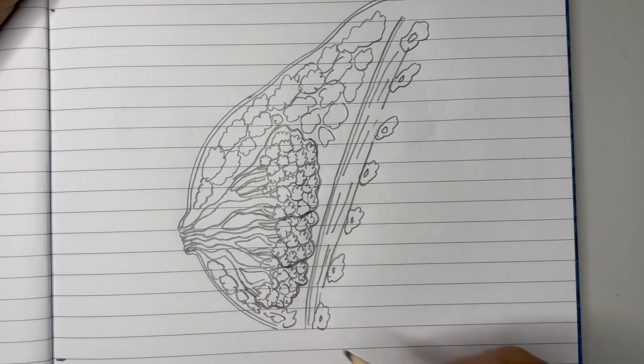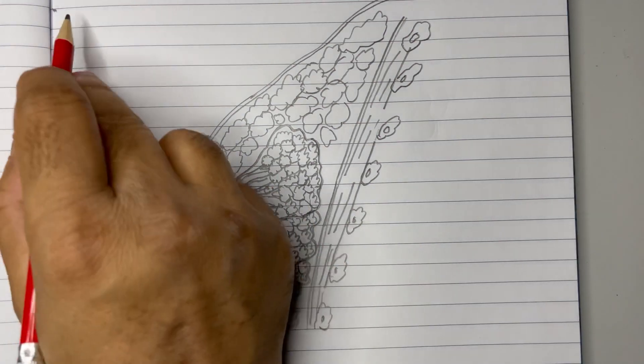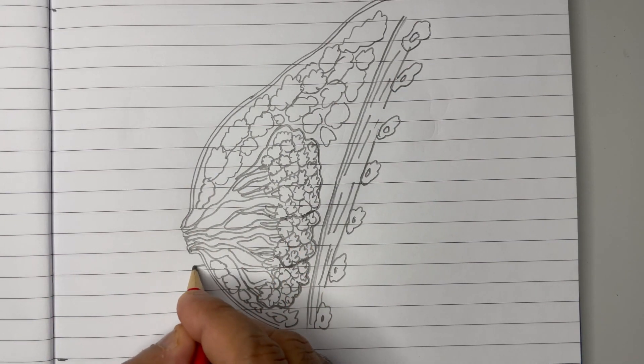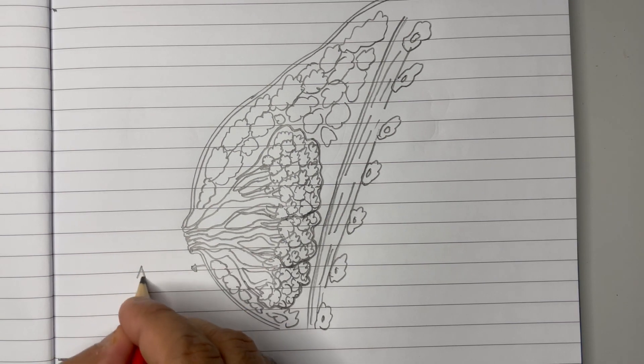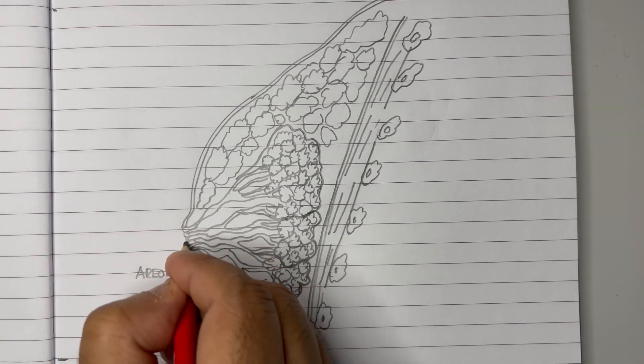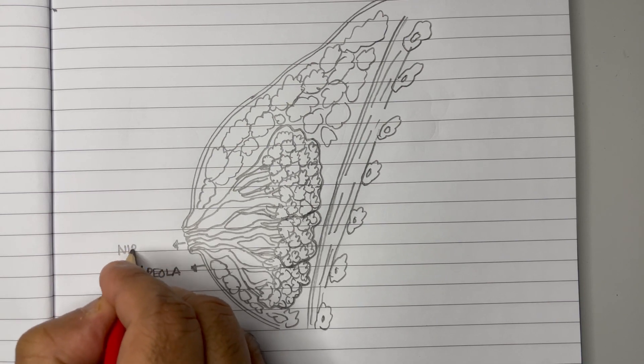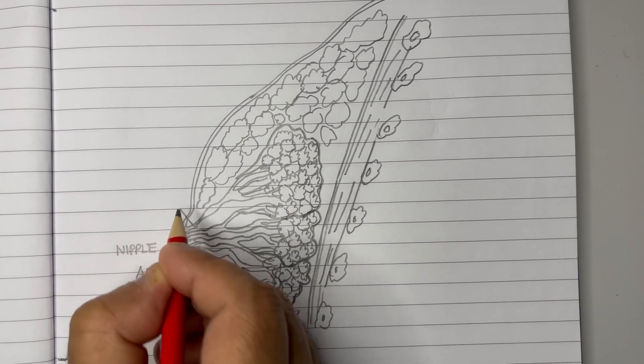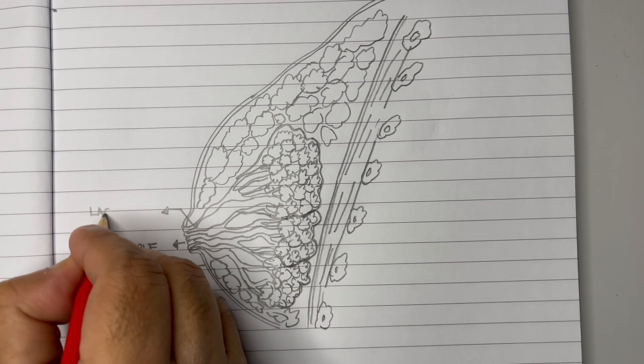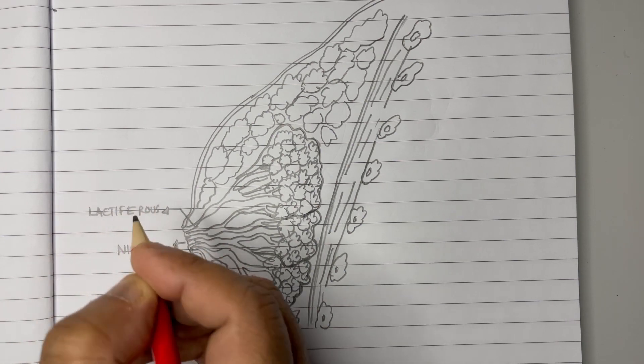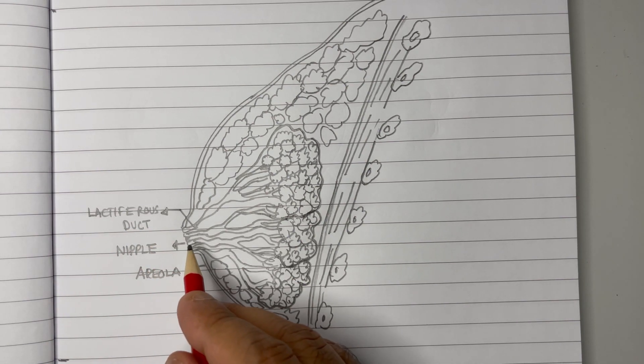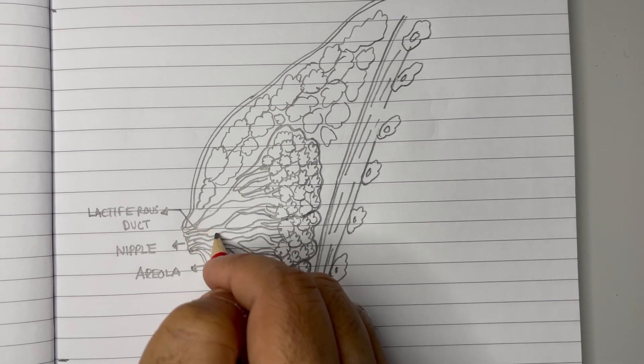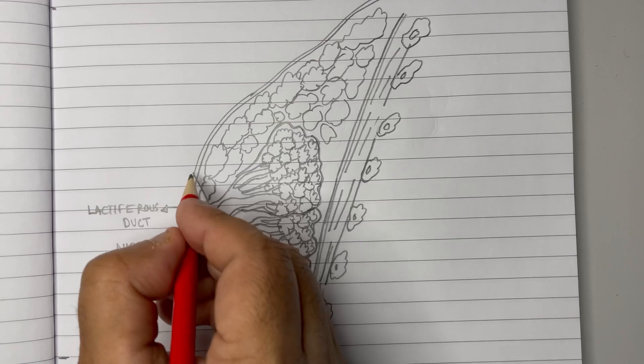Now we have almost done the diagram. It's time to label the parts. This part is called areola. Label neatly. Areola, and this is the nipple. Now from the nipple, these ducts which are passing out are called lactiferous duct. Lactiferous duct is the last duct which joins with the nipple, coming from these wide structures. This wide structure is called ampulla.